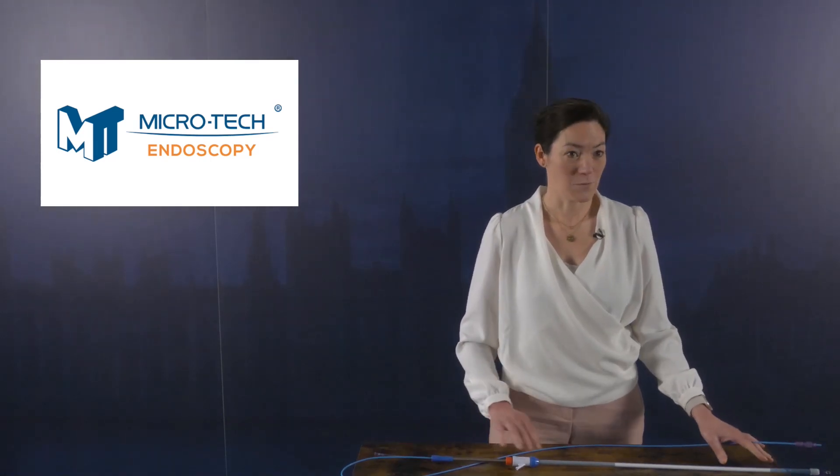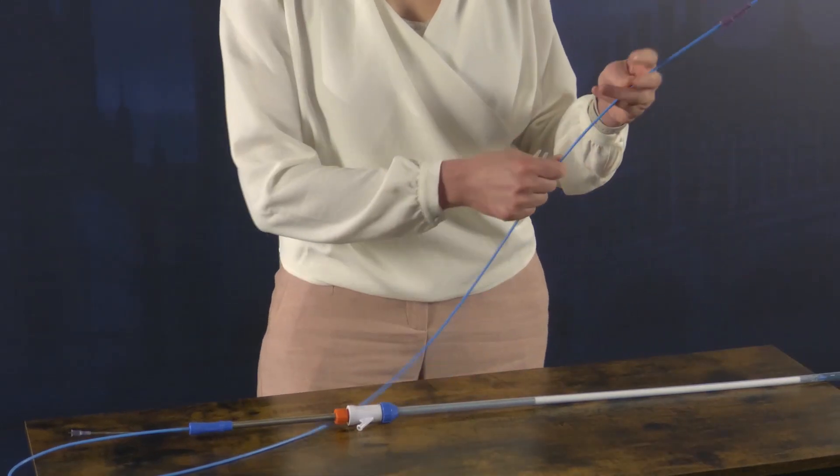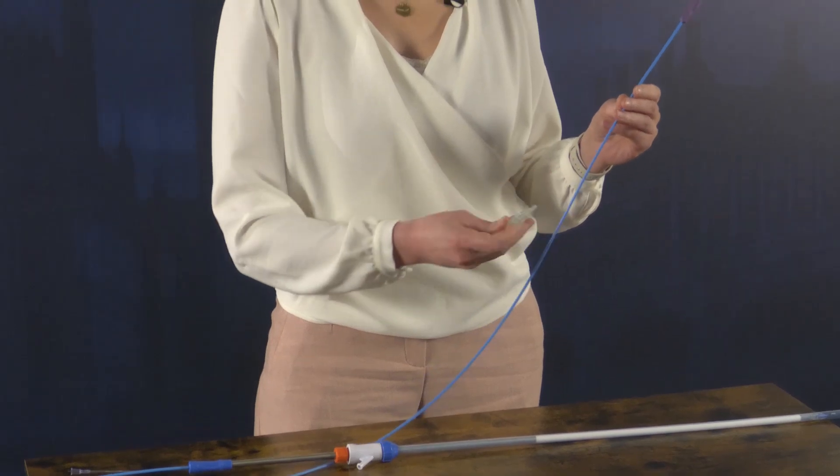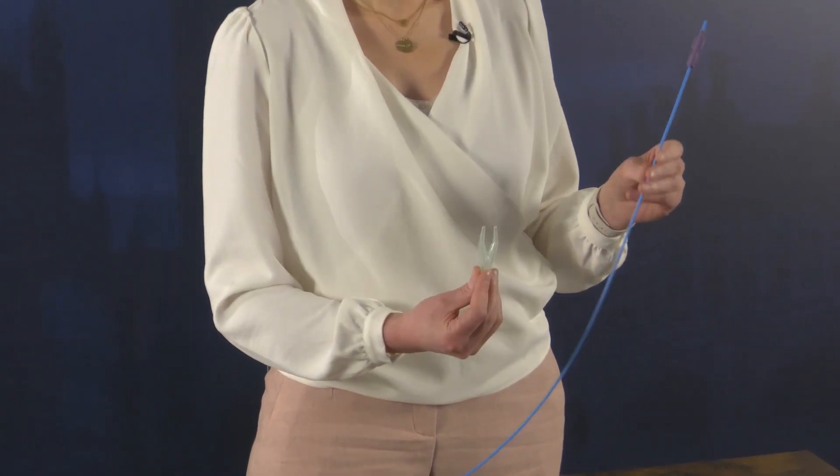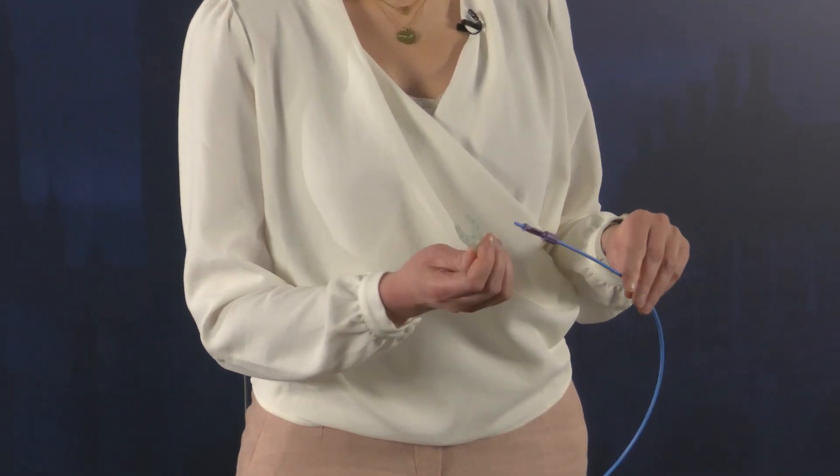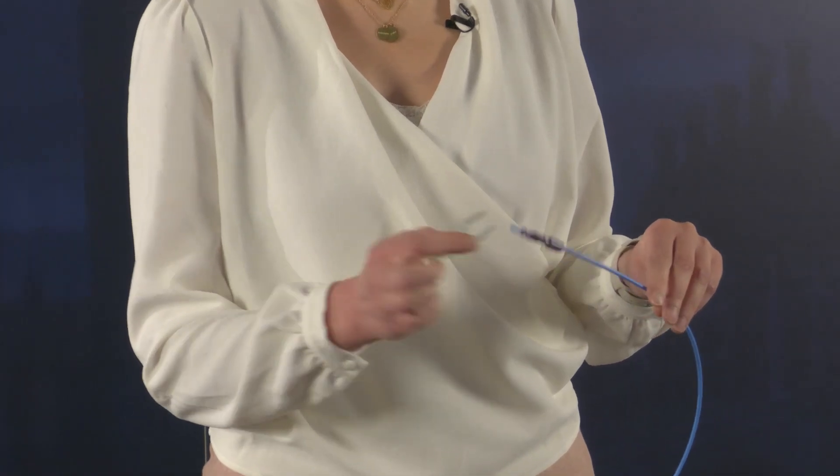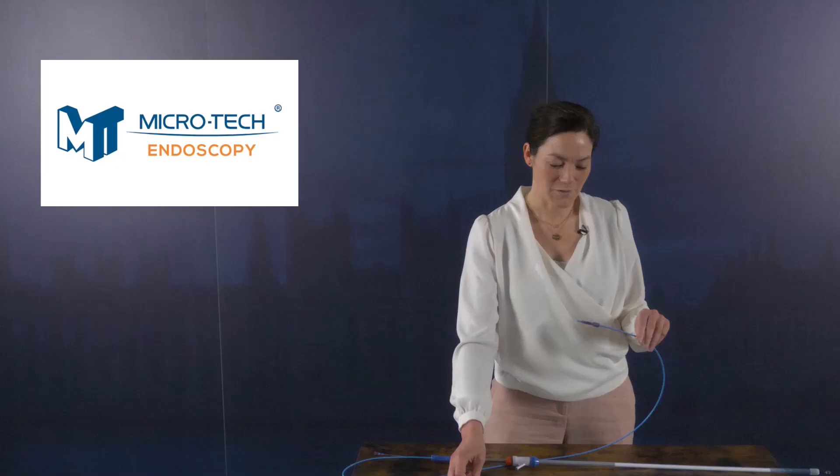In the box you have the stent with the releasing system, the blue tube for suction, and a Y connector, which you need to connect the tube to the vacuum pump, which is really important to apply good suction.